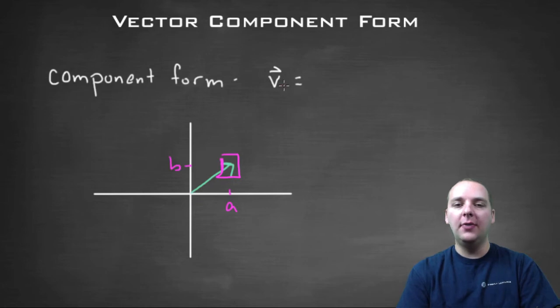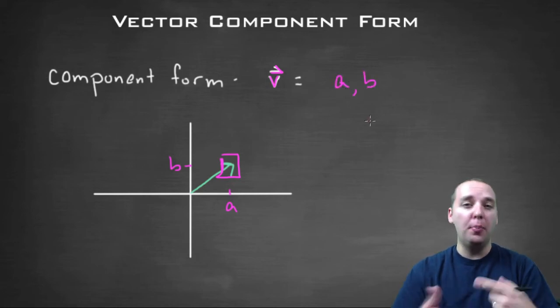then we're going to write the vector. Vectors are written as a v, or a w, or some letter, usually with a half arrow over the top. We're going to write this vector as a comma b, almost like a point.